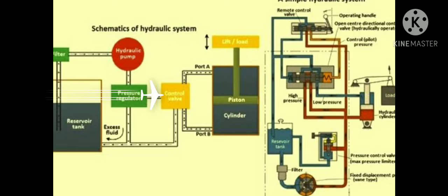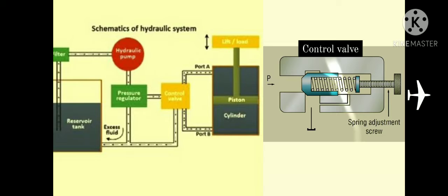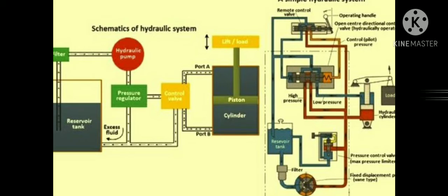After the pressure changes as required, fluid goes to the control valve and then it goes to the cylinder. Here, we use control valve to change the direction of the fluid.